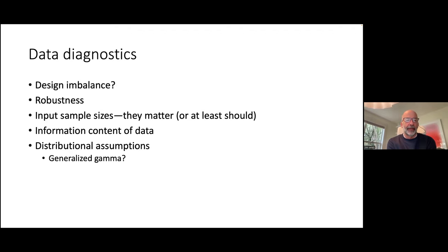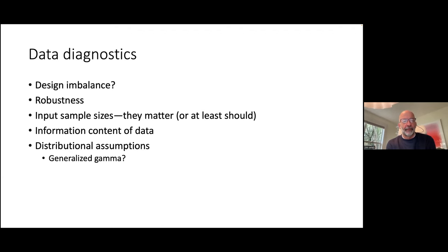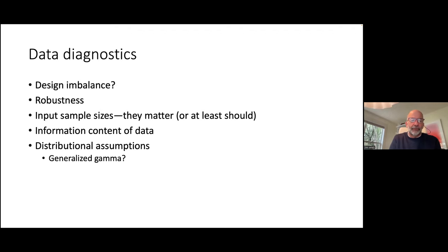Input sample sizes really matter and should always matter — I think that's a step in the right direction for considering down-weighting composition data. There's been a lot of discussion about data-rich models that have no information. A brief mention on distributional assumptions for index data: a shout-out to Cole Monahan and Jim Thorson, who are making progress implementing a generalized gamma distribution for index data, where the shape and skewness can vary between years — I think it's going to be a fruitful endeavor.